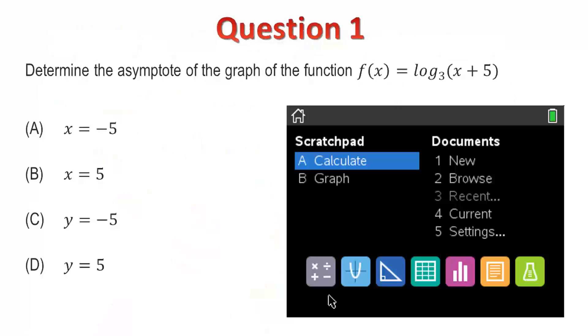Question 1. Students should recognize that a logarithmic function has a vertical asymptote, and that this particular example includes a translation of the function parallel to the x-axis. However, students may be distracted or uncertain about the change of base, so it would be appropriate to graph the function just to check.